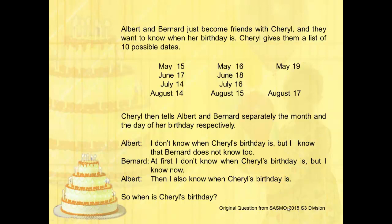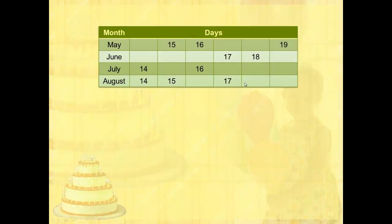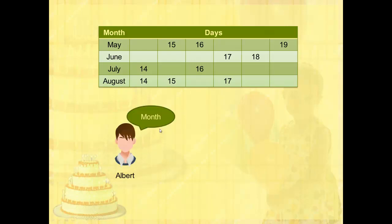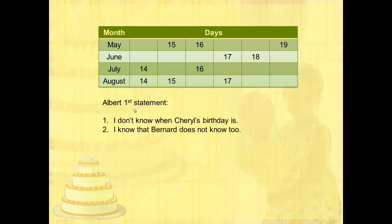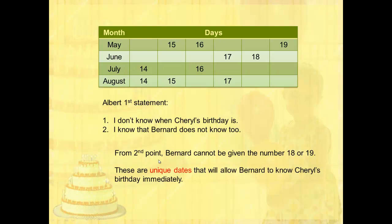Let's proceed to solve this problem. First, we can collect the information and present it in a table format, like so. Albert is presented with the month and Bernard is presented with the day. From Albert's statement that Bernard does not know, Bernard cannot be given the number 18 or 19, since these are unique dates that would allow Bernard to know Cheryl's birthday immediately. So we can proceed to strike those off.